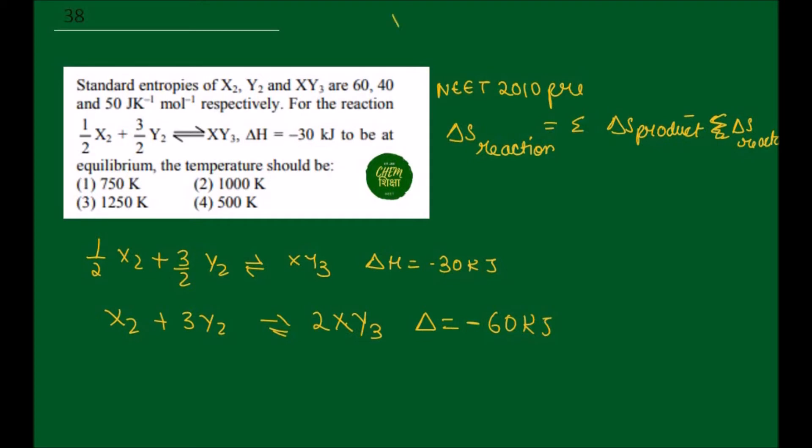We know that X₂ is equal to 60 joule Kelvin inverse mole, Y₂ is equal to 40, and XY₃ is equal to 50. So according to this, we have to calculate delta S of reaction.